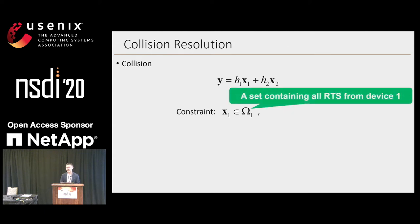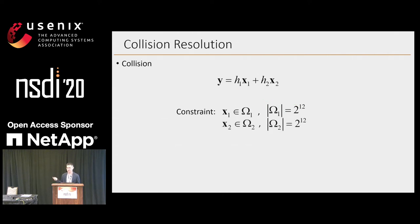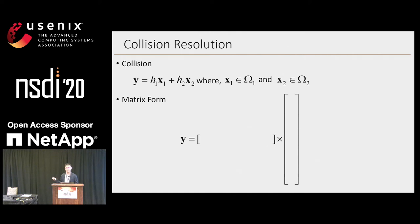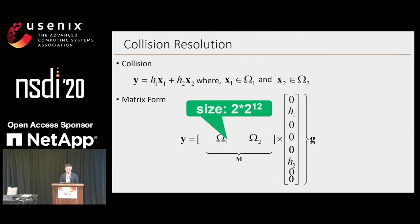Suppose for each device it has 2 to the power of 6 NAV values. So the size becomes 2 to the power of 12, which is acceptable. We name the constraint of X1 as omega_1, and the size of omega_1 is 2 to the power of 12. Similarly for X2, we can use omega_1 and omega_2 to build the matrix form. The size of matrix M, because there are two devices, is 2 times 2 to the power of 12. With this size, solving G by compressive sensing is feasible, and the collision can be resolved.